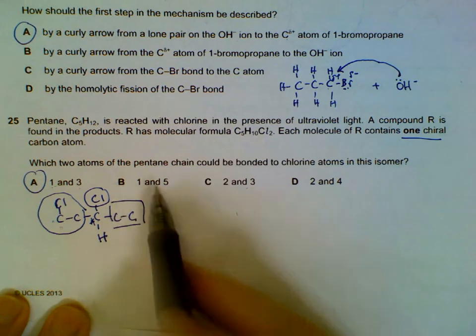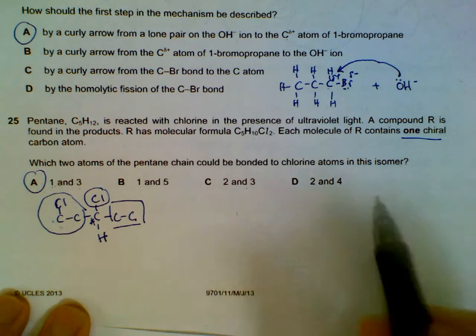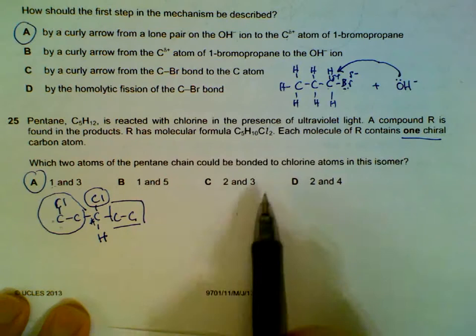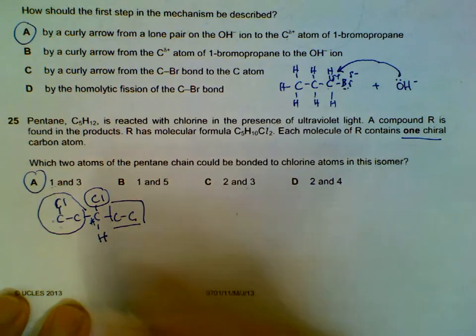If you were to try the rest, you realize that some of them will have no chiral and some of them might have two chirals, which is not what we want because we only want one chiral carbon.